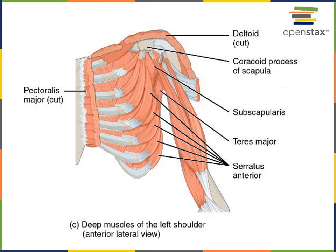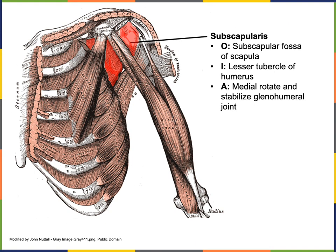In this illustration we have an anterior view that allows us to see the subscapularis. This is a deep view with pectoralis major removed so that we can see subscapularis on the anterior surface of the scapula, where it has its origin from the subscapular fossa. The action of subscapularis is to medially rotate and stabilize the glenohumeral joint. The insertion is the lesser tubercle of the humerus.